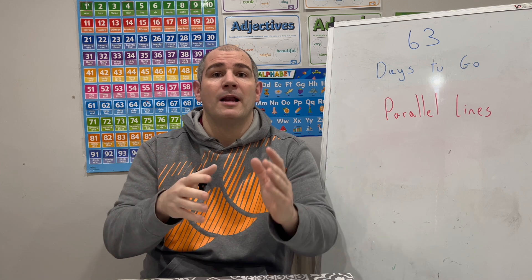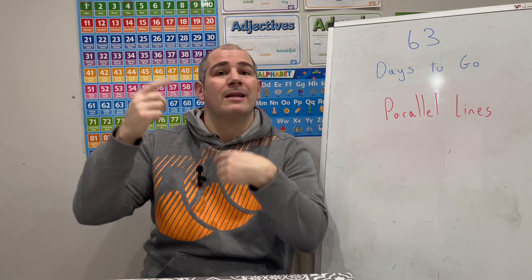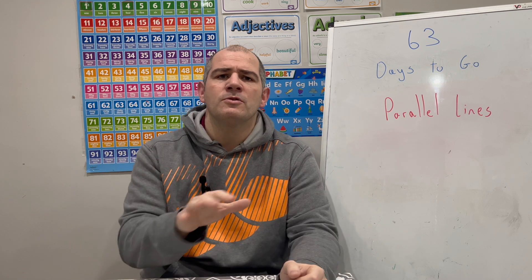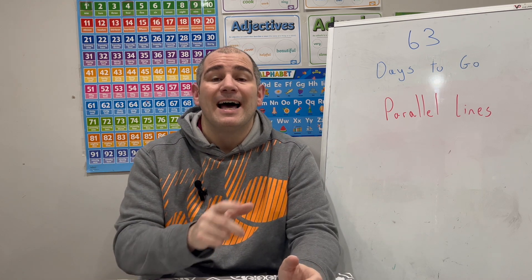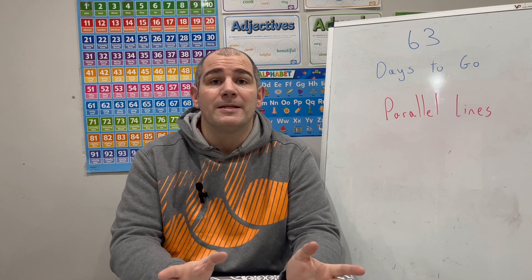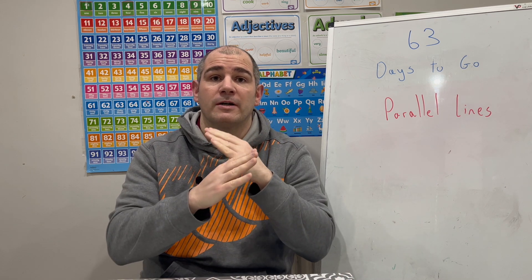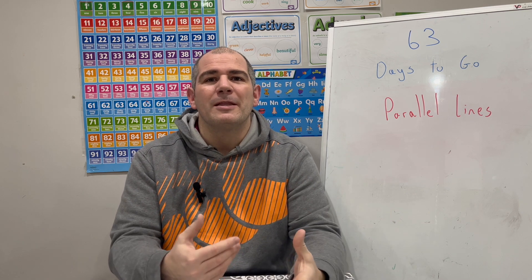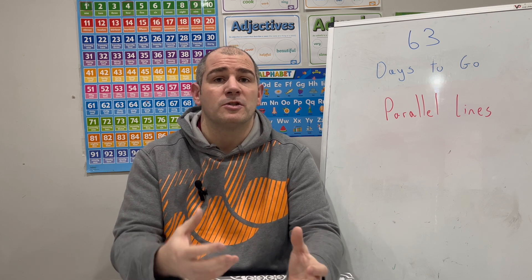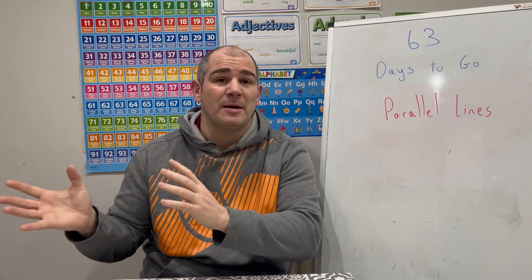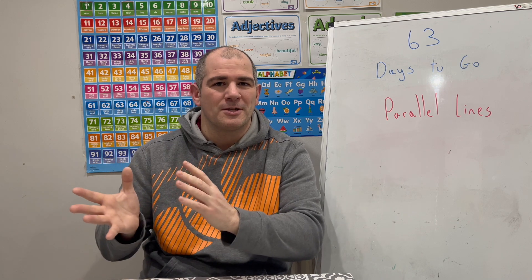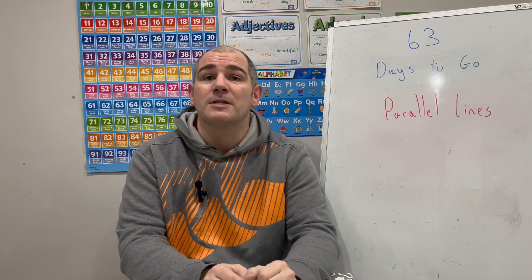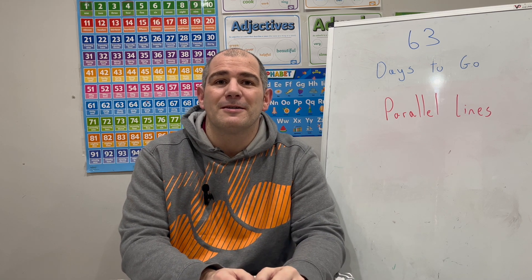The more complicated questions involve knowing a line is parallel to another, working out the gradient, and finding the value of c using a given point. Tomorrow we're going to be looking at perpendicular lines — whenever lines cross each other at 90 degrees. Hopefully these two videos will boost your confidence for coordinate geometry questions on the GCSE papers. Keep up the hard work — see you tomorrow at 3 o'clock for 62 days to go!